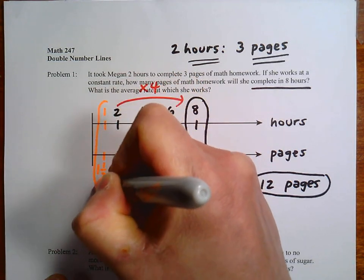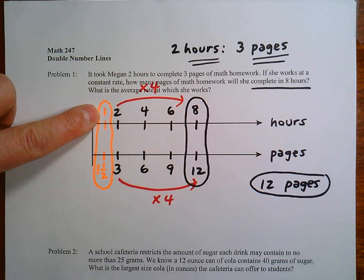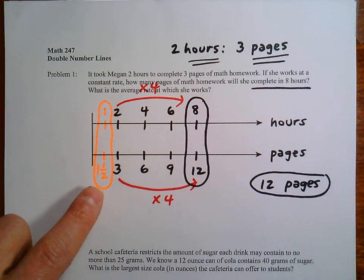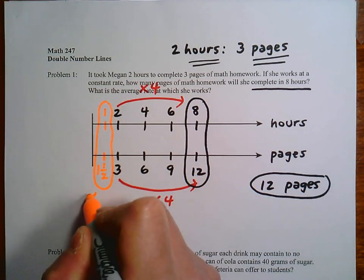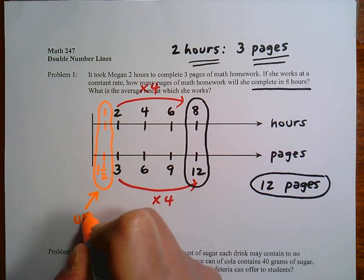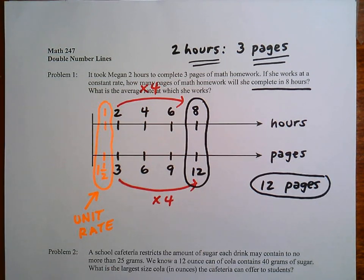So this here will give you the average rate. So it's really telling us in 1 hour of time, she gets 1.5 pages done. So you can see that. And from last week, we actually call this a unit rate, because one of the quantities is 1. So 1.5 pages in 1 hour of time.